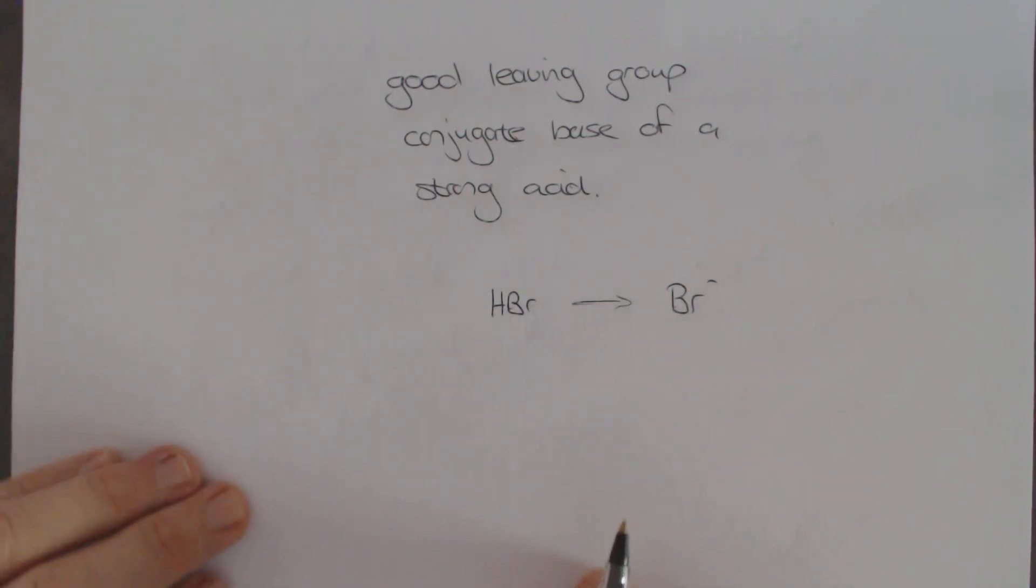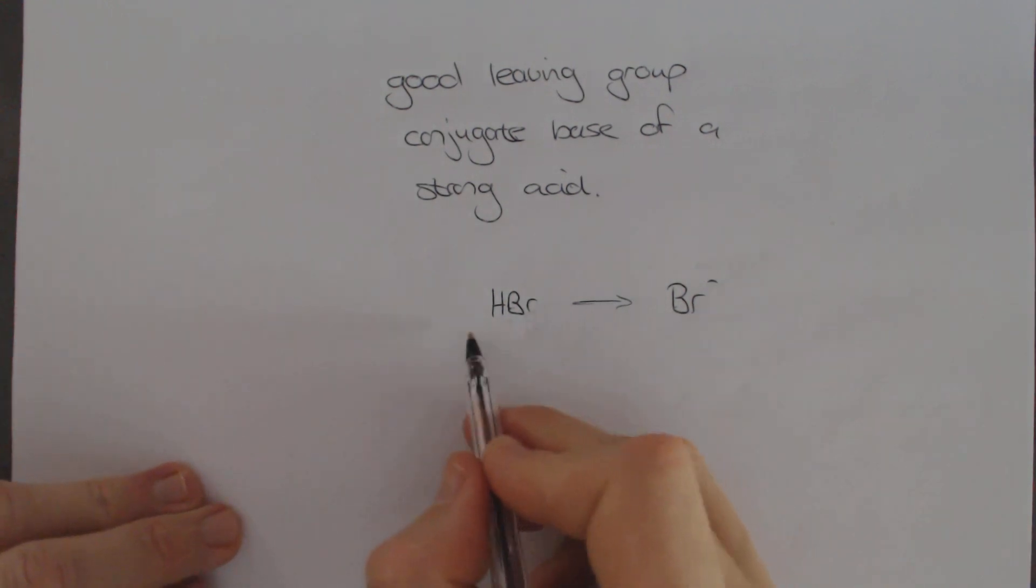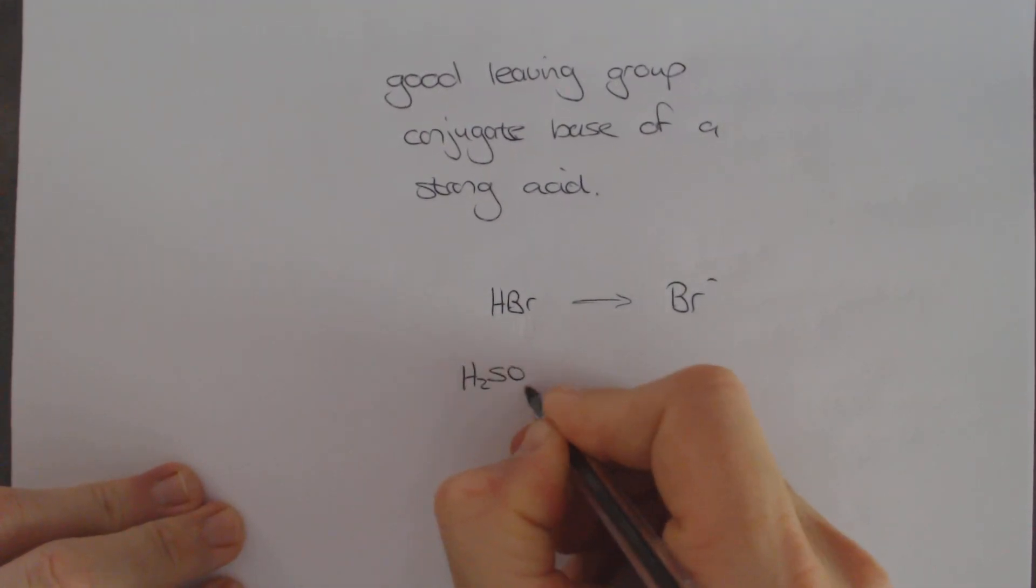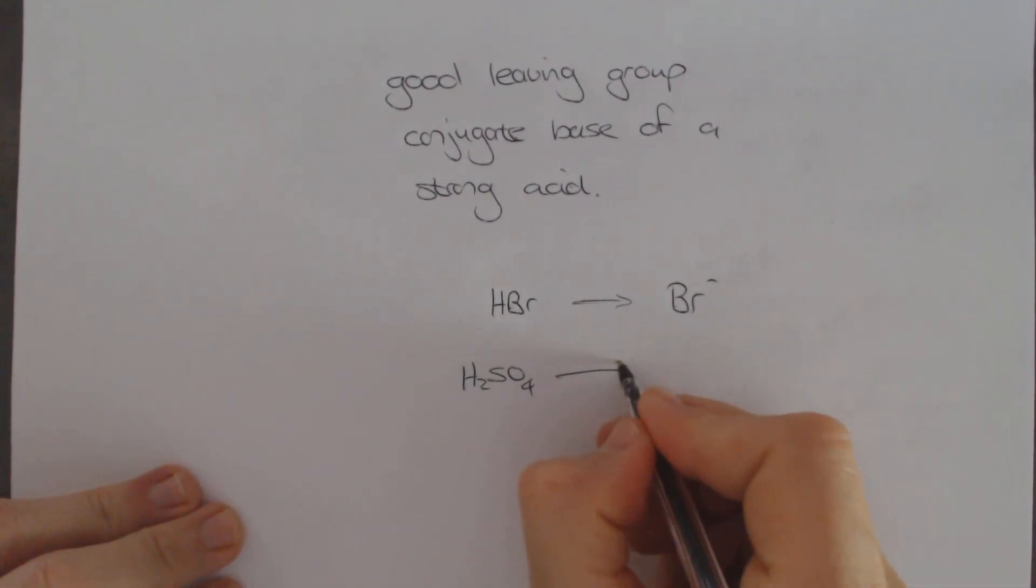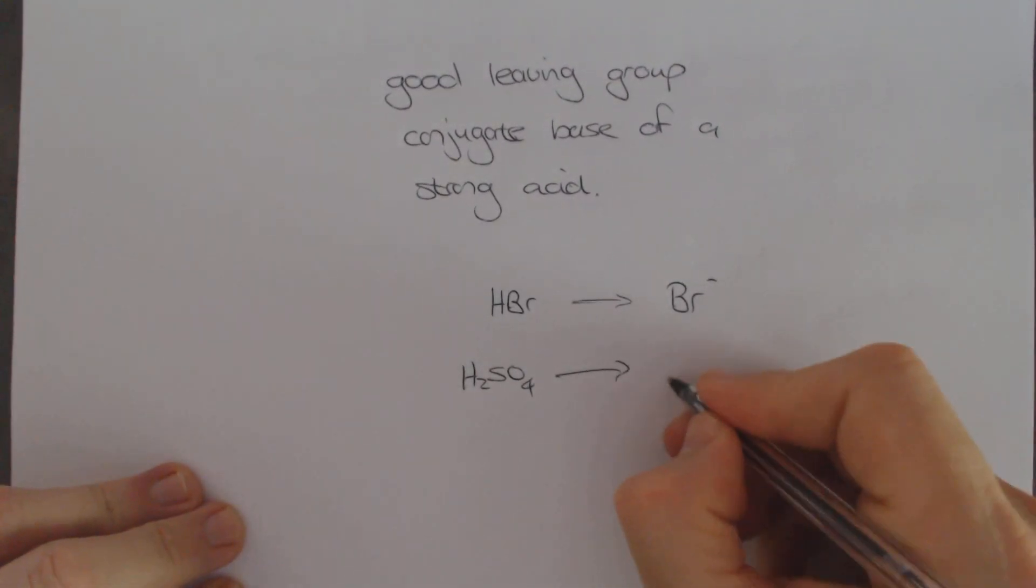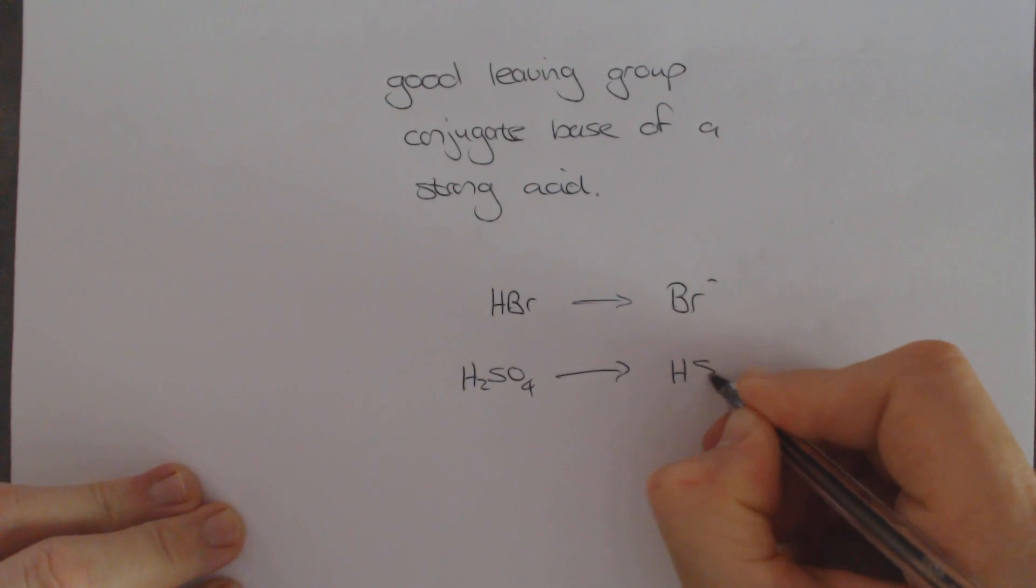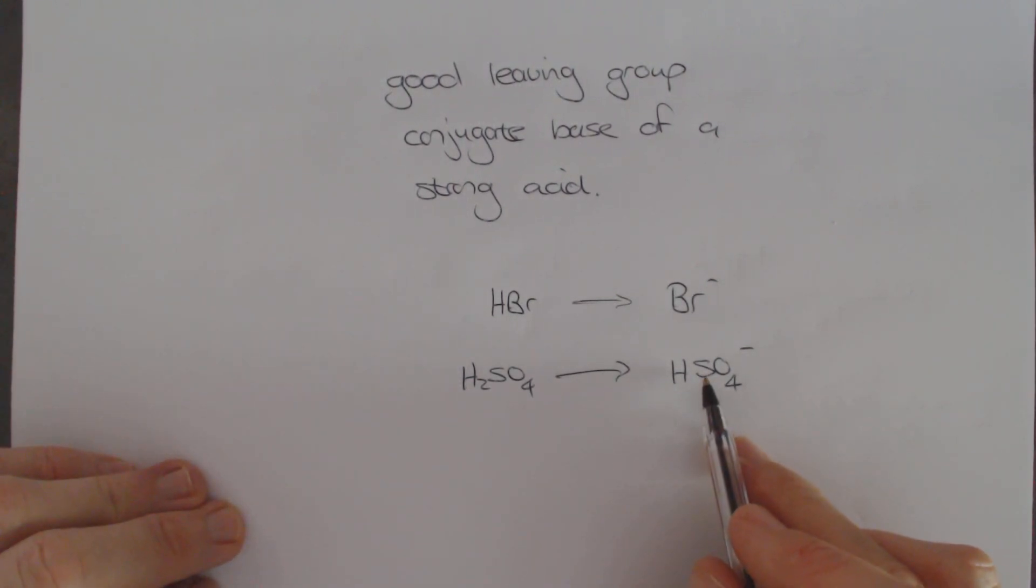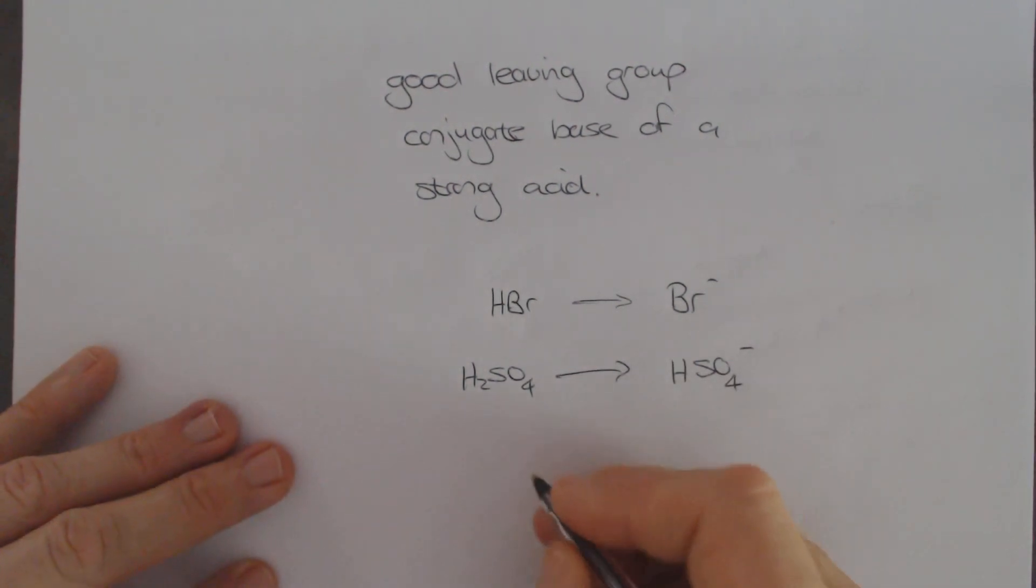But there is an important one which you need to learn in this course. What about H2SO4? H2SO4 you also know is a really strong acid. Its conjugate base would look like HSO4-. So this would be a very good leaving group. But actually in organic chemistry it's very difficult to have these things sitting on a molecule. We actually have organic versions of this. These are called the sulfonic acids.